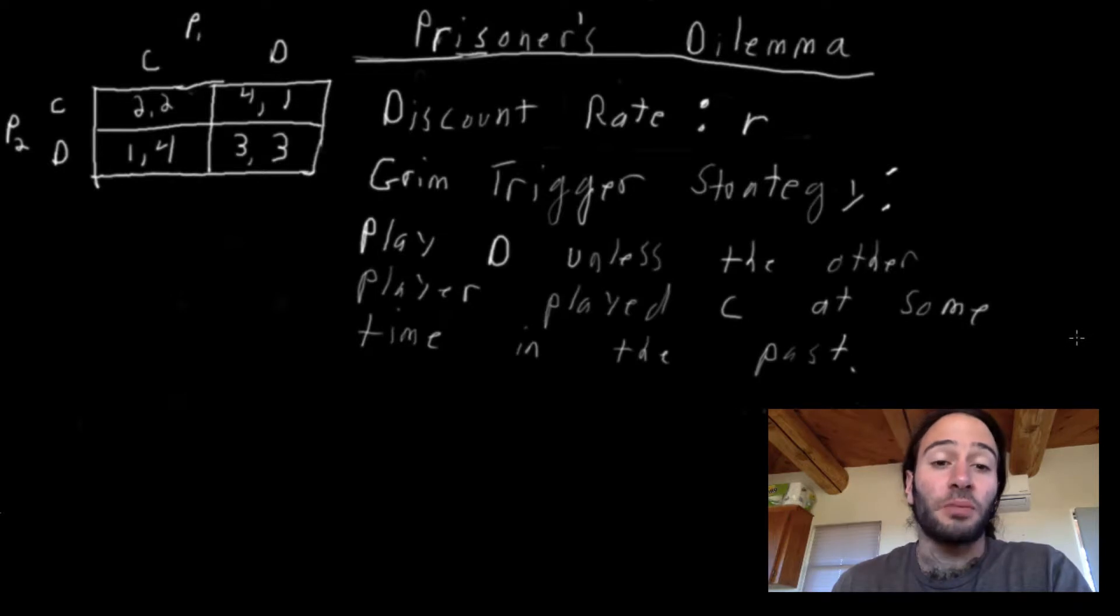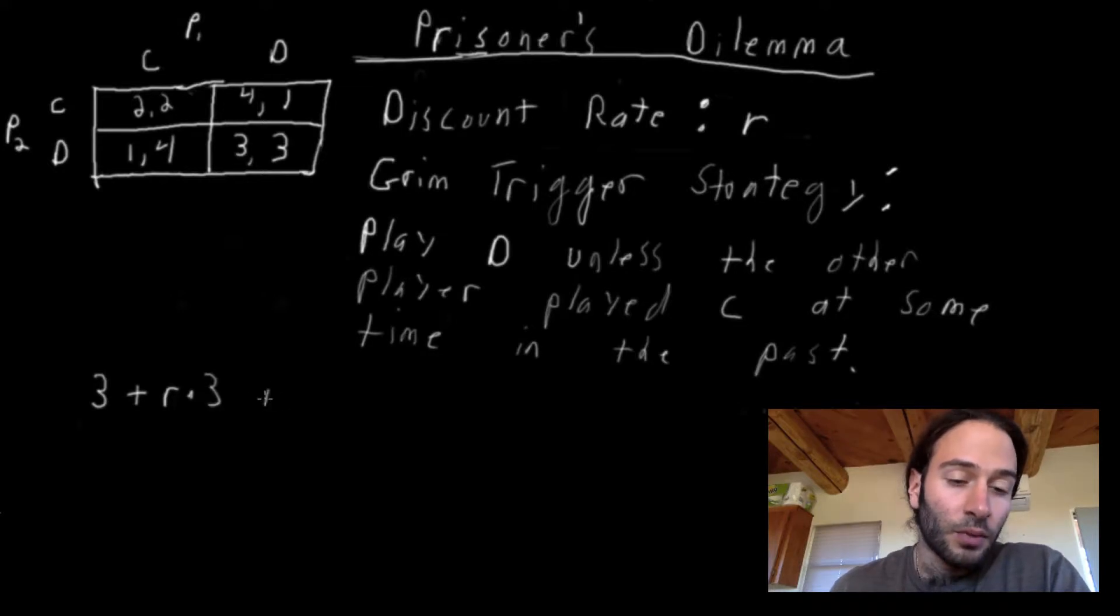This says, always play D unless the other person plays C. And in that case, as soon as you see the other person confess, then you confess from that point on. So let's suppose both players are playing grim trigger. If both players are playing grim trigger, they're always going to play don't confess, don't confess, and earn three forever. What is the present value or the total discounted sum rewards of getting three forever? It's getting three today, plus your discount rate times three tomorrow, plus your discount rate squared times three in two periods from now, and so on.